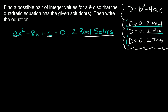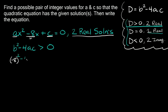Our discriminant has to be bigger than zero in order to have two real solutions. So b squared minus 4ac has to be bigger than zero. We don't know a or c, but we do know b — b is equal to negative 8. So we plug in negative 8 for b: negative 8 squared minus 4ac is greater than zero.